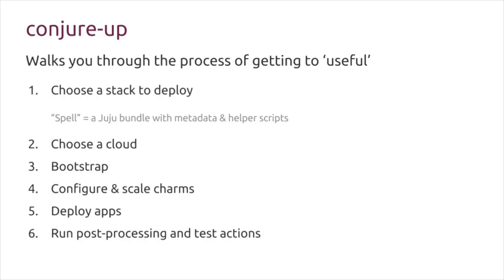ConjureUp is a single command line tool that displays a command line UI. You can SSH to your server and get a usable UI — not quite a GUI, but a command line UI. It walks you through the process of deploying big software with Juju. The first step is you choose a stack to deploy. We have some built-in options called spells — spells are just a Juju bundle with metadata and helper scripts. The design philosophy is that you're using Juju bundles and Juju charms, so everything you learn using ConjureUp are skills you can use for Juju on its own later.